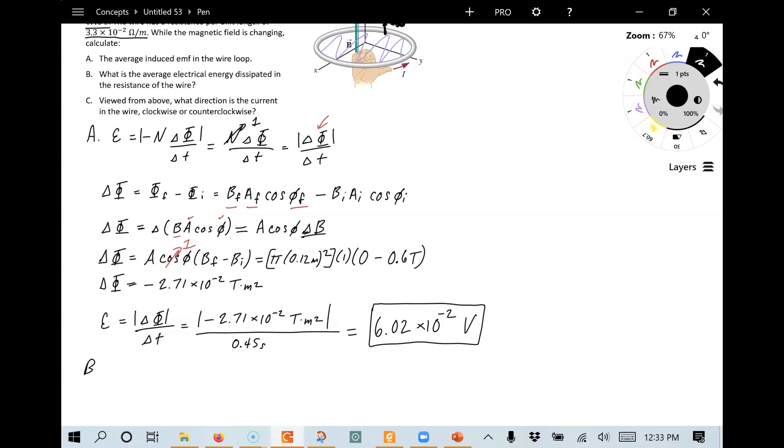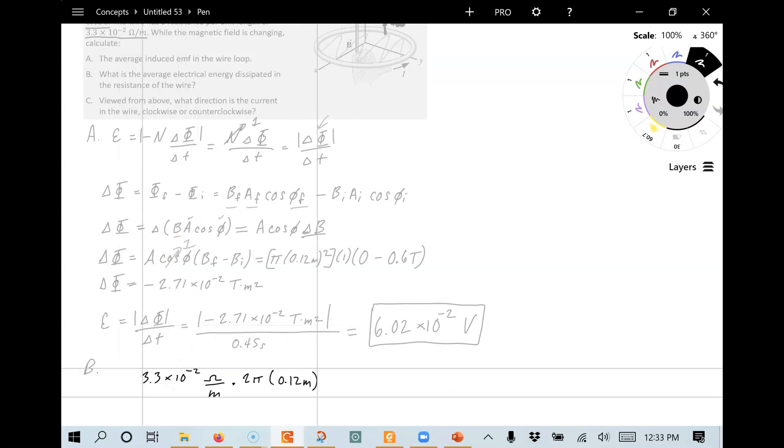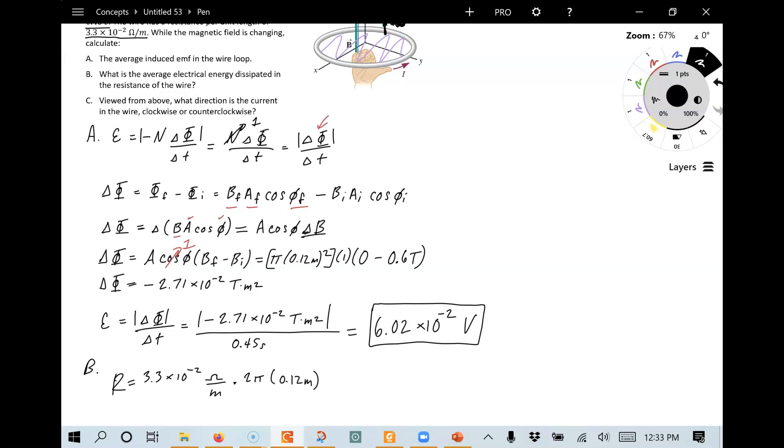So for part B, we know that we've got 3.33 times 10 to the minus second ohms per meter. And this wire has got a radius of 0.12 meters. So the circumference is going to be 2 pi r. We need to multiply this by 2 pi r. What is r? r is the 0.12 meters. And so this is going to give us the total resistance here for the wire. Comes to 2.49 times 10 to the minus second ohms.